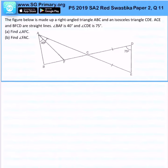The figure below is made up of a right-angled triangle ABC, so this is 90 degrees, and the isosceles triangle CDE. It's indicated that they are the same. BAF is 40, CDE is 75, all is indicated in the diagram.